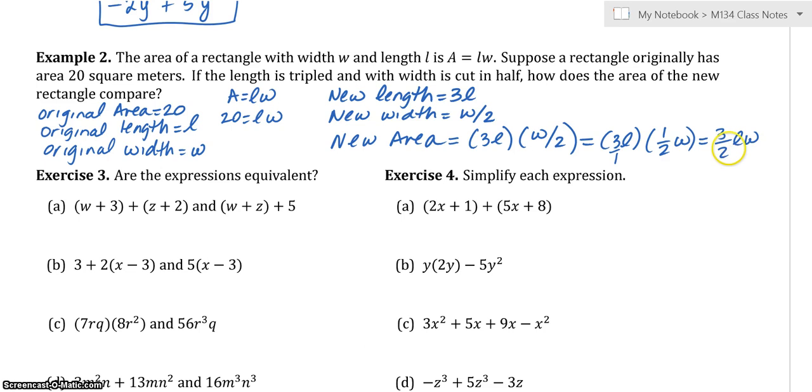Which, by the way, if you're weak on fractions, I do have a topic video on fractions for you to watch in the topics list. But this would be 3 over 2 times LW. We know that that over here is 20, which is 3 over 2 times 20 over 1. And that would be 60 over 2. Or you can cancel these. Whatever way you go, it's 30.